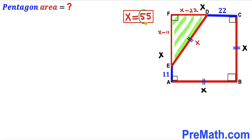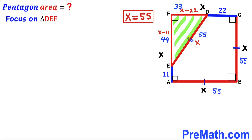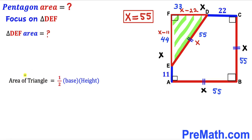Our X value turns out to be 55. So X minus 22 equals 55 minus 22, which gives us 33, and X minus 11 equals 55 minus 11, which gives us 44. Now focusing on right triangle DEF, we calculate its area using the formula: area equals one half times base times height. The base of this triangle is 33 and the height is 44.